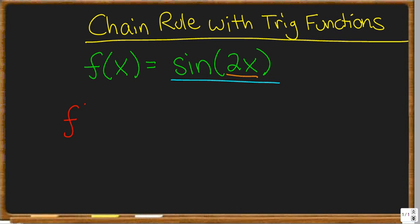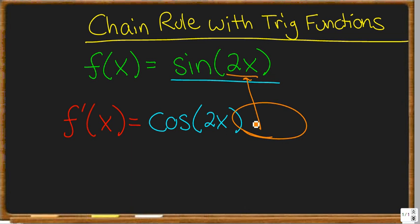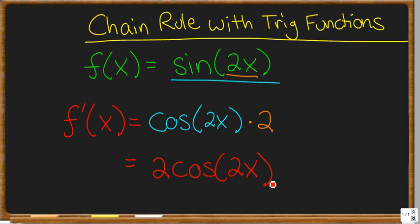So for f prime of x, we look at the derivative of sine first, with the 2x inside of it, and we don't mess with the 2x at all. The derivative of sine of anything is just the cosine of whatever's on the inside, which in this case is 2x. So we have cosine of 2x. But then we still have to go deeper and take the derivative of whatever's on the inside, tacking it on at the end. The derivative of 2x is 2, so we end up with 2 times the cosine of 2x.